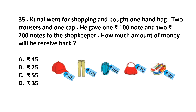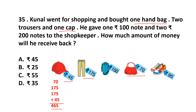Question number 35. Kunal went shopping and bought 1 handbag, 2 trousers, and 1 cap. He gave 1 Rs. 100 note and 2 Rs. 200 notes to the shopkeeper. How much will he receive back? 1 handbag is Rs. 70, 1 trouser is Rs. 175 (he bought 2, so Rs. 350), and 1 cap is Rs. 45. Total spent: 70 plus 175 plus 175 plus 45 = Rs. 465.